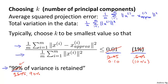And for many data sets, you'd be surprised. In order to retain 99% of the variance, you can often reduce the dimension of the data significantly and still retain most of the variance. Because for most real life data sets, many features are just highly correlated. And so it turns out to be possible to compress the data a lot and still retain 99% of the variance, or 95% of the variance.